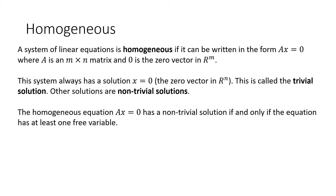Note that there is always a solution to this. If you set x equal to zero — the zero vector — there is always going to be a solution. That's called a trivial solution. It's so easy, it's trivial: something multiplied by zero equals zero. Anything else, any non-zero solution, is called a non-trivial solution.